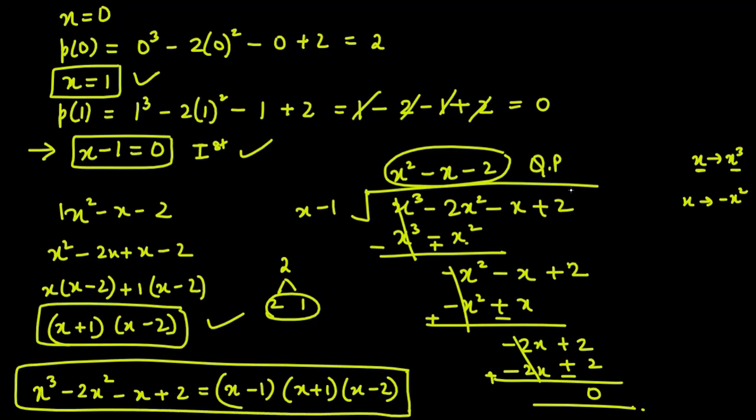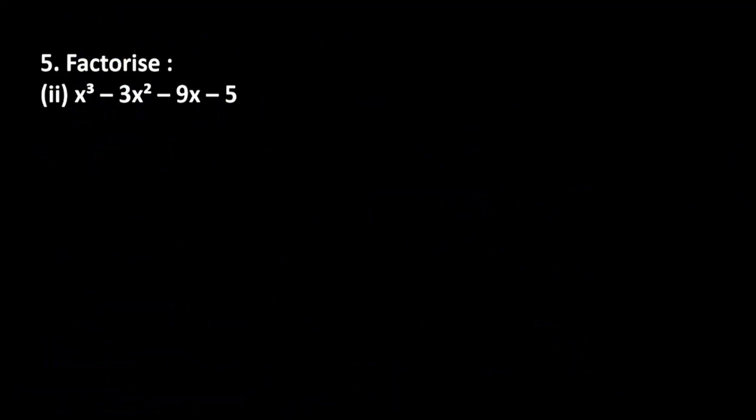That's the complete answer for the first part. Now let's move to the second part of question number 5: x cube minus 3x square minus 9x minus 5. We need to use the hit and trial method first to find the first factor so we can proceed to find the next 2 factors. I think minus 1 should give 0 here, so let's check by placing x = minus 1.